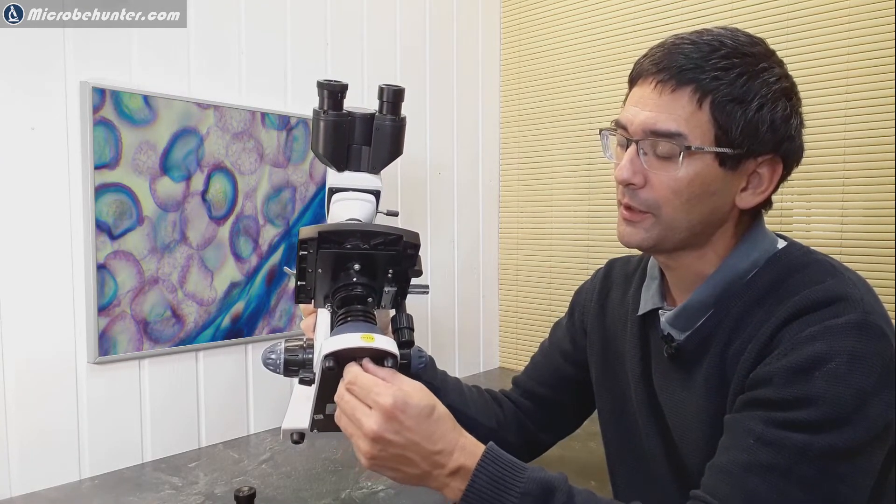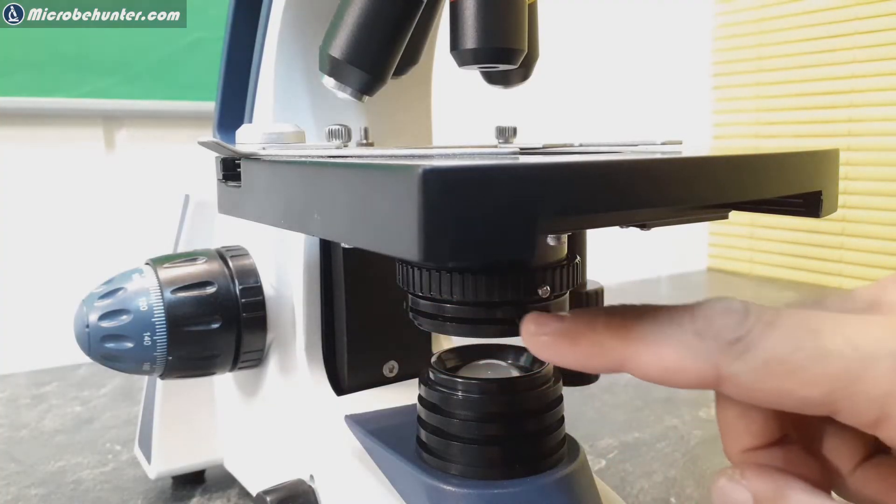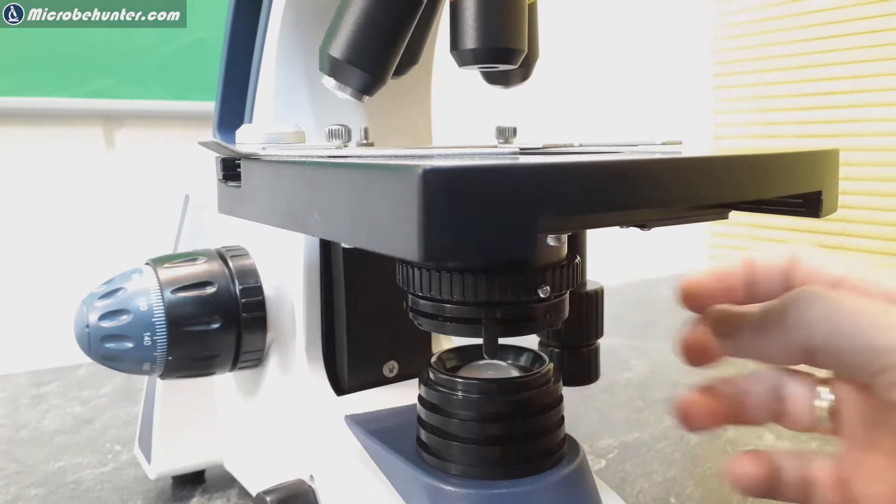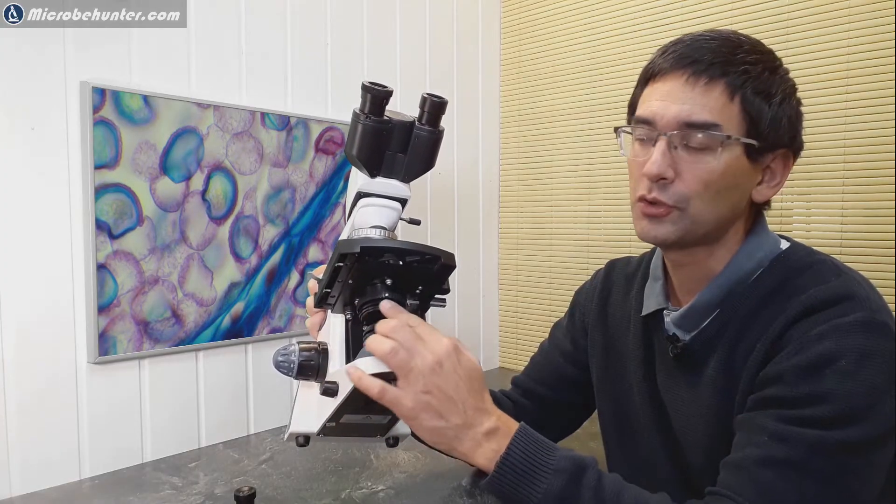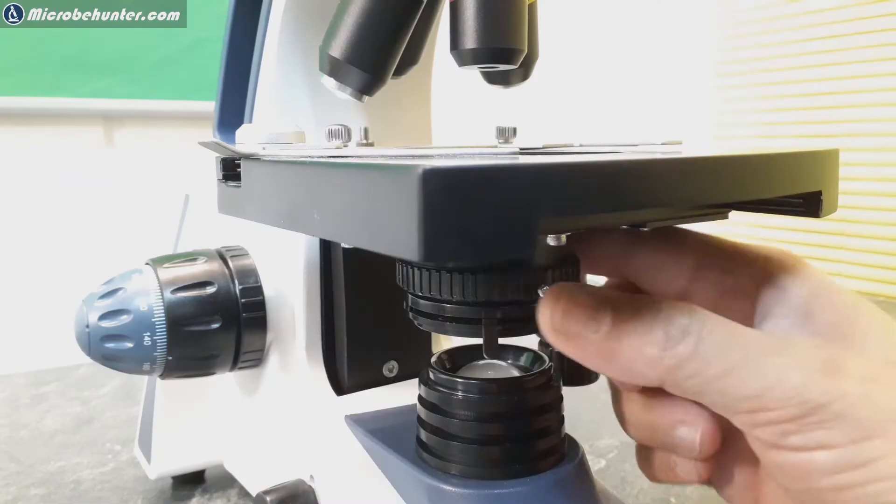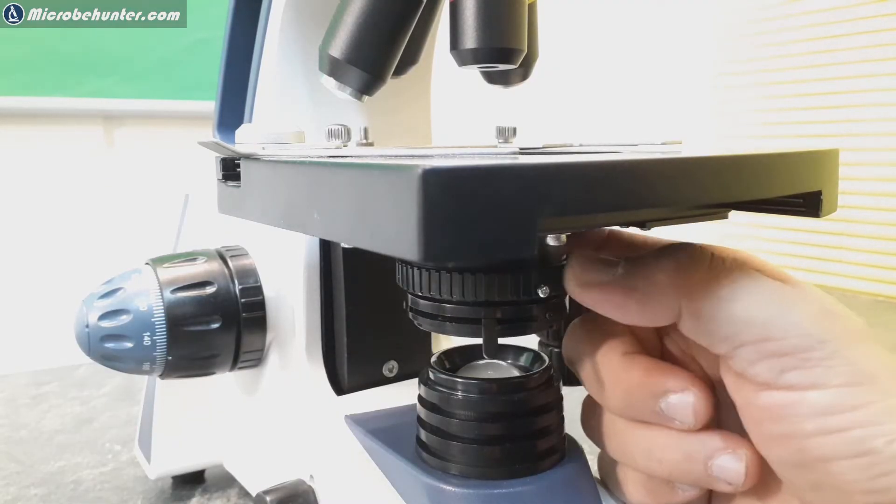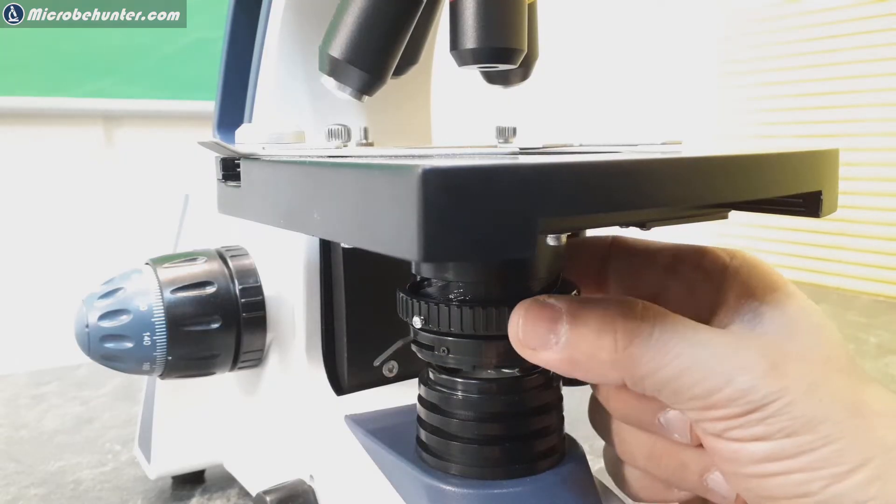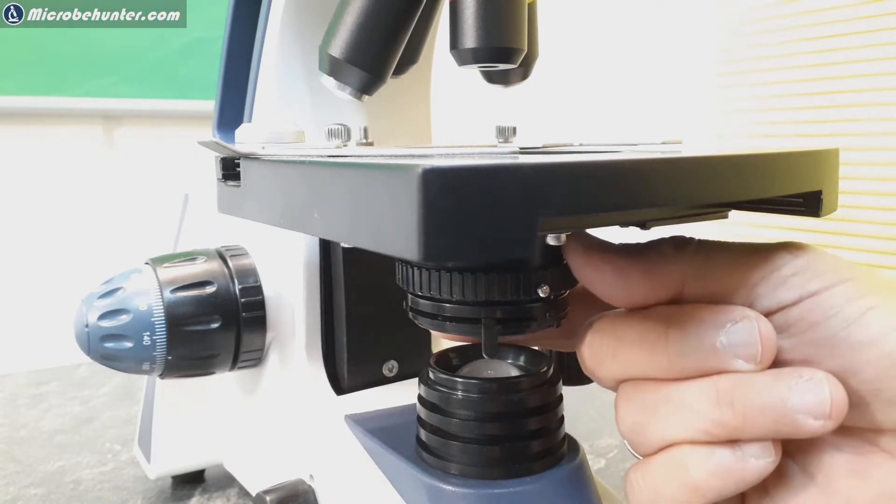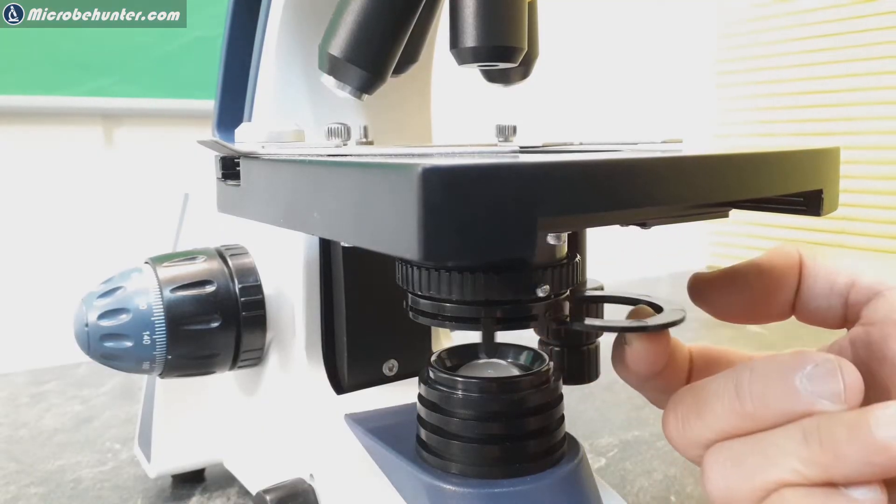We're now going to continue down here. This here is of course the condenser of the microscope. There's the aperture diaphragm here as well. The condenser can be raised and lowered, but not by moving a lever, but by rotating the condenser.